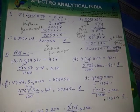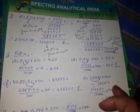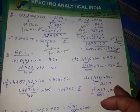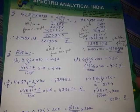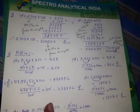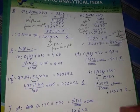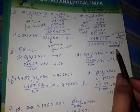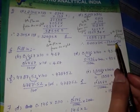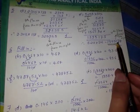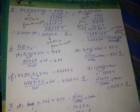तो इस तरीके से आप decimal point को place करेंगे multiplication करने के बाद। तो आपका answer क्या हो जाएगा इस question का: one thousand five hundred ninety-five point one seven eight।